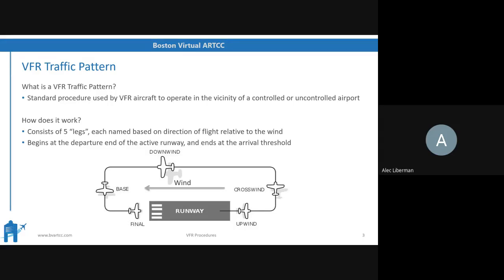The pattern begins at the departure end of the active runway, where the airplane lifts off, and ends at the side where the airplane lands. Airplanes always take off and land into the wind, so you try to take off and land with a headwind. That is why all legs of the traffic pattern are designed around the wind. First is the upwind, where airplanes take off, flying runway heading for about half to three-quarters of a mile. Then a 90-degree left turn to crosswind, flying perpendicular to the wind. Then downwind — parallel to the runway — then base, then final.